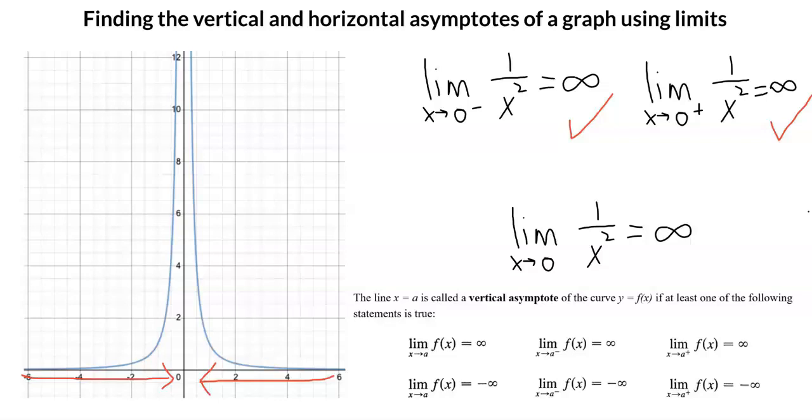Therefore, we can recognize that there is a vertical asymptote at x equals zero, because a equals zero in this example. We can inspect the graph and confirm that this is true.